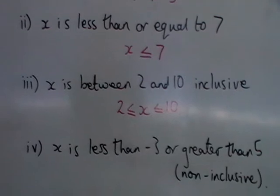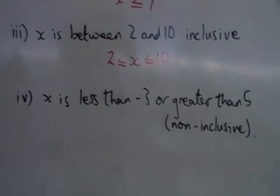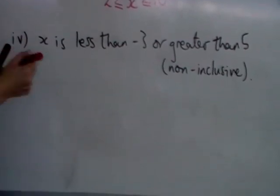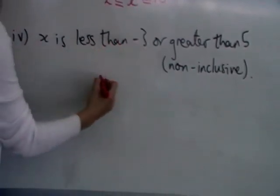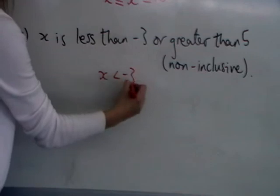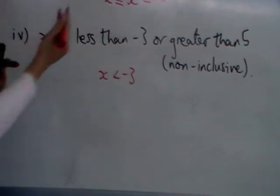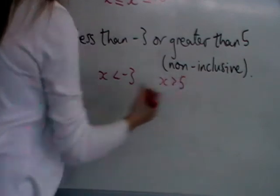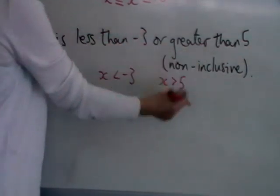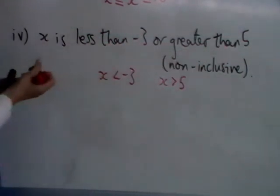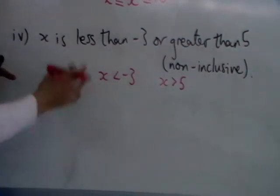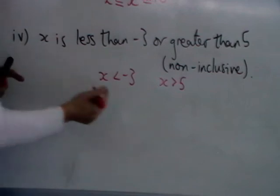Moving on to the last one, we've got x is less than minus 3 or greater than 5. So x is less than minus 3 will be written like this, and greater than 5 will be written like this. Non-inclusive means we are not including the 5 or the minus 3. Now this time we write it as two separate inequalities because it is two separate sets of numbers.